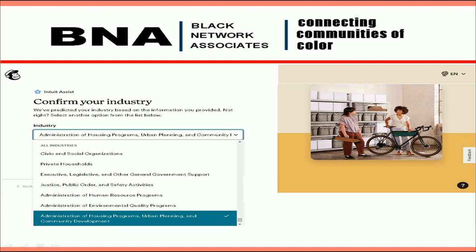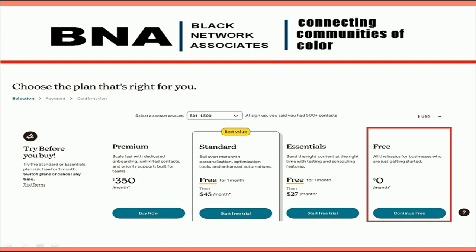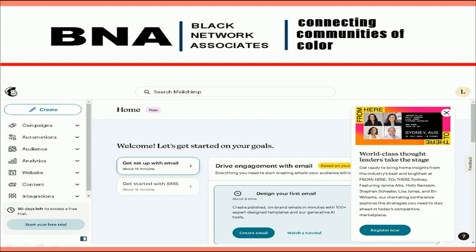Next, MailChimp wants to confirm your industry. Click the drop-down menu and scroll to the bottom of the options, then choose Administration of Housing Programs, Urban Planning and Community Development. MailChimp will once again ask you to confirm your plan — select the free plan. You should then get a screen preparing your account, and in a few seconds be routed to your dashboard. Congratulations, your MailChimp account is now active.